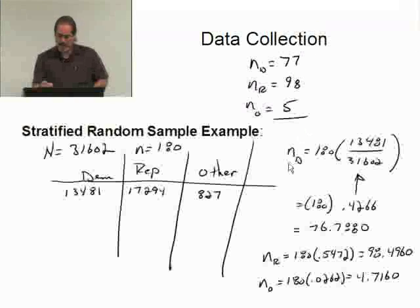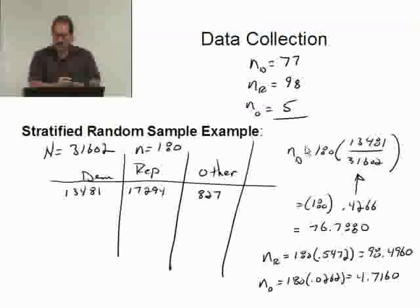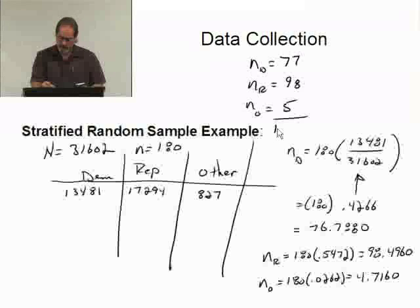When I add these up, I will actually end up, let's see, let me grab my calculator real quick and make sure I didn't make a mistake here. But let's see, 77 plus 98 plus 5 equals 180. So this totaled 180.